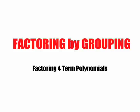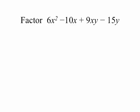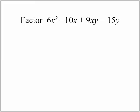Factoring by grouping — factoring four-term polynomials. So we're going to factor the following four-term polynomial. We know that we have four terms: here's one term, separated by an addition or subtraction; a second term; a third term; and a final term. So we have here a four-term polynomial.